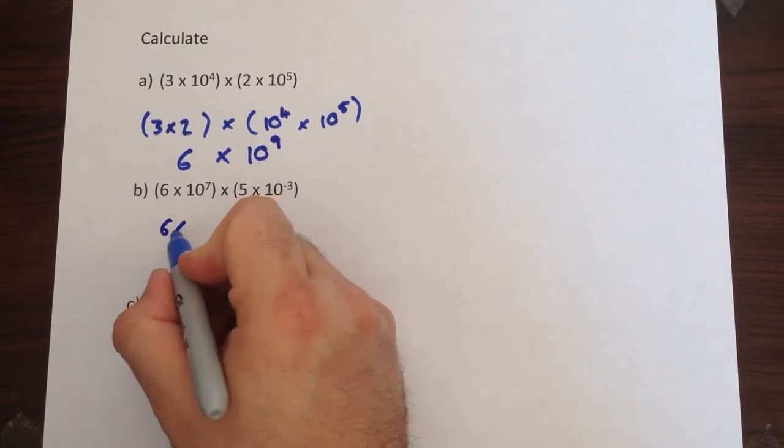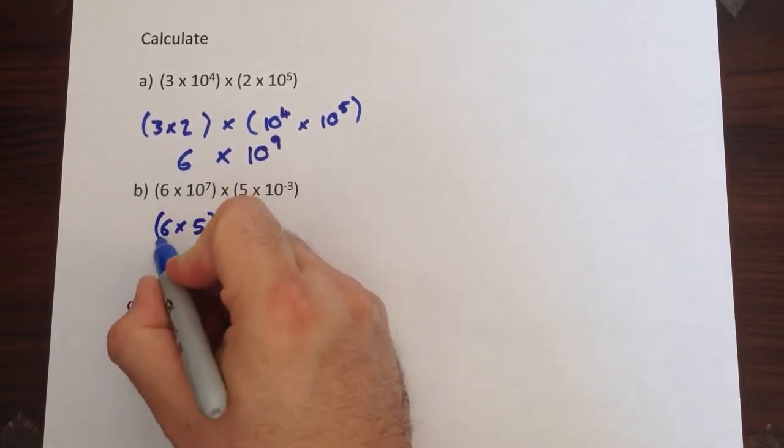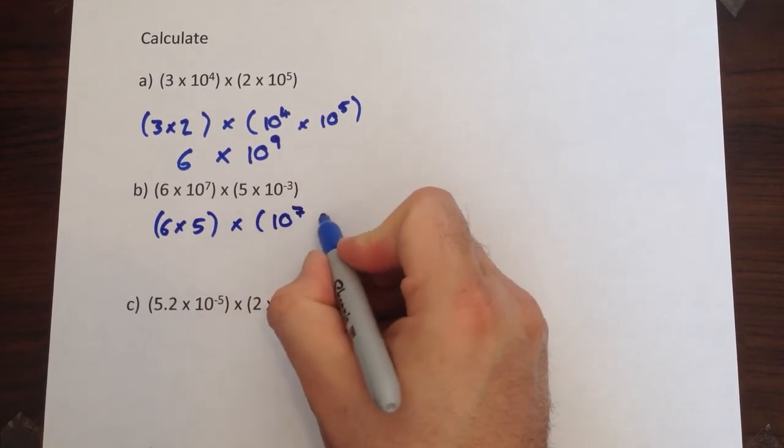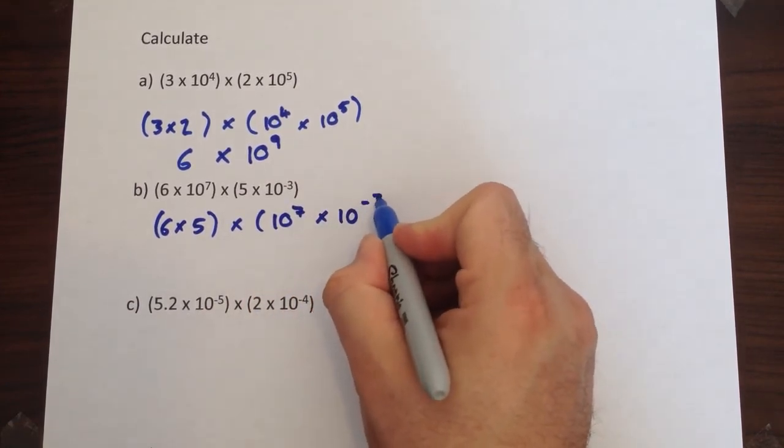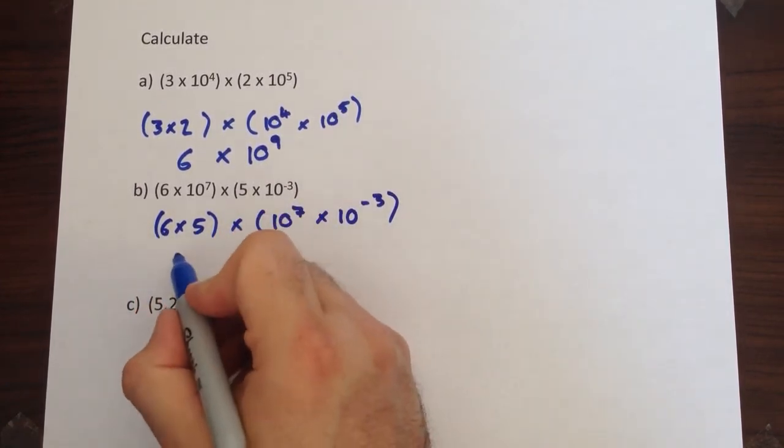Same method here. We're going to do 6 times 5 there, and we're going to do 10 to the 7 multiplied by 10 to the negative 3 here. 6 times 5 is 30.